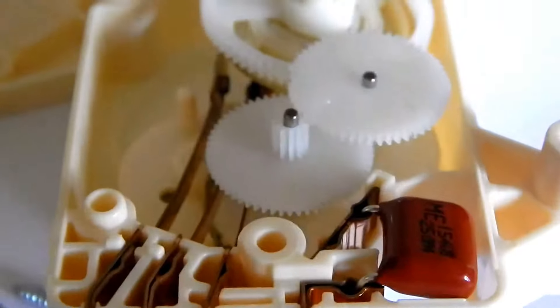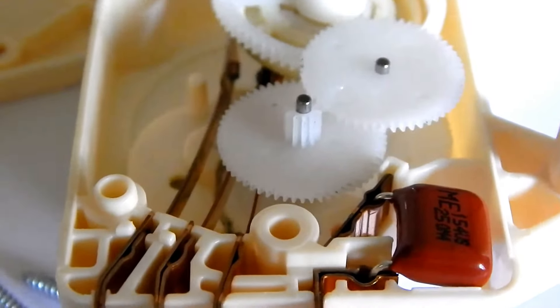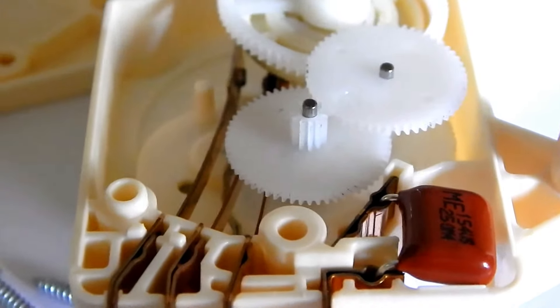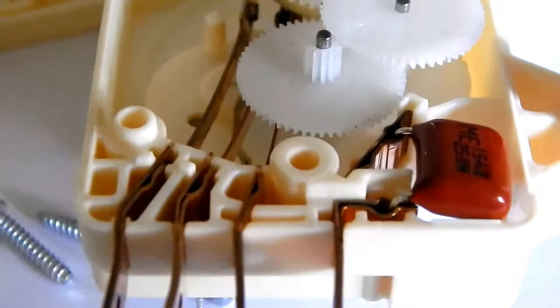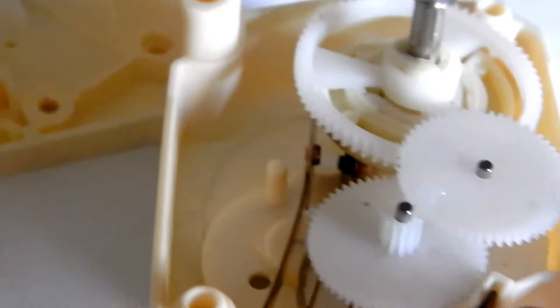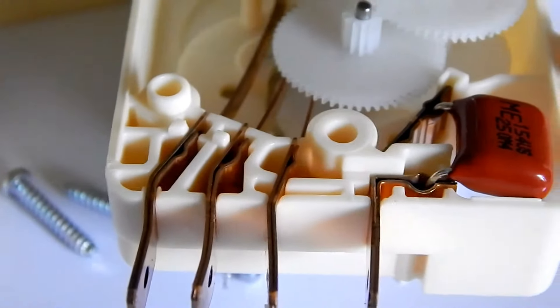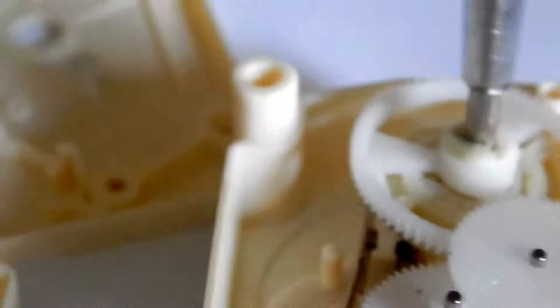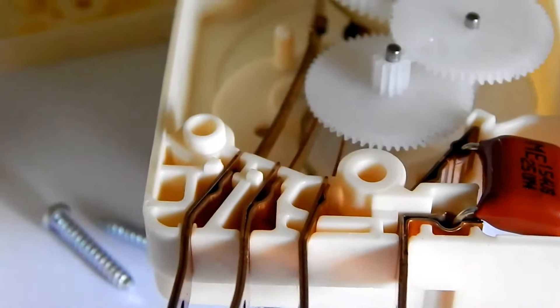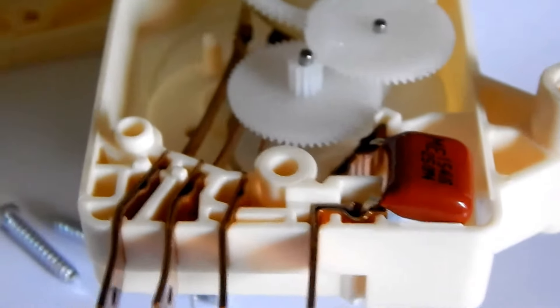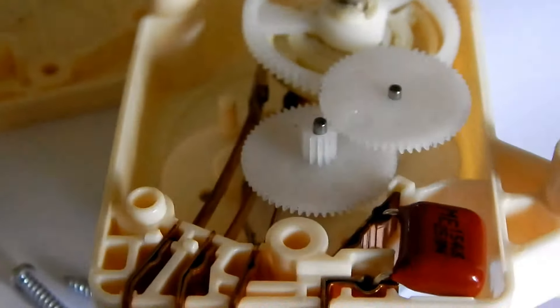So this is a function of the defrost timer: it removes the ice in the refrigerator evaporator part and thereby it keeps the fridge working in a very consistent manner. So if it does not work you have to replace it. So that is all about the defrost timer and how it works in the refrigerator.